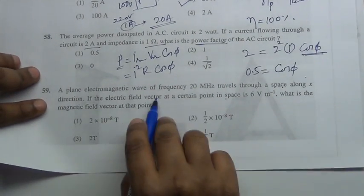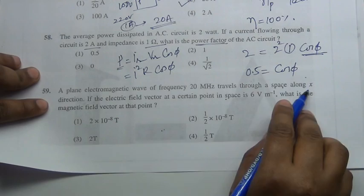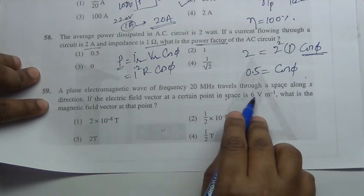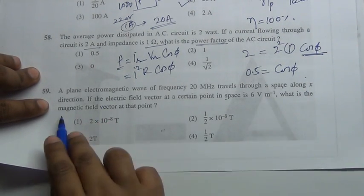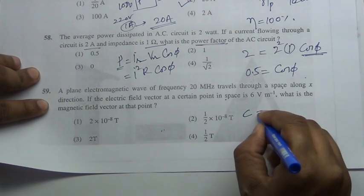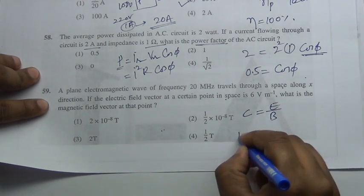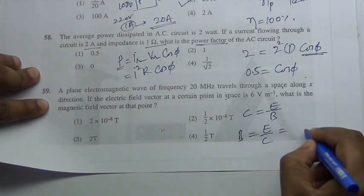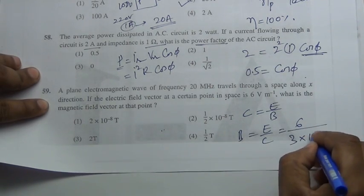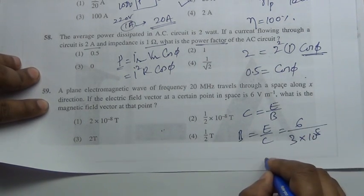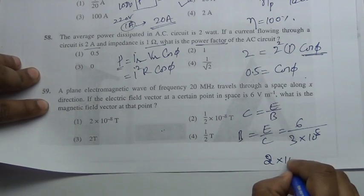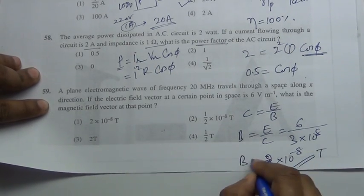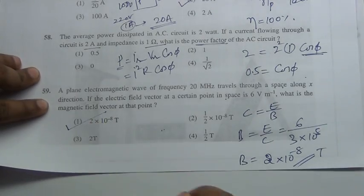A plane electromagnetic wave of a given frequency travels through space with a given electric field vector. To find the magnetic field vector, use B = E/c. With E = 6 V/m and c = 3×10⁸ m/s, the magnetic field B = 6/(3×10⁸) = 2×10⁻⁸ T.